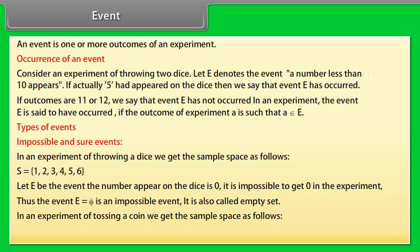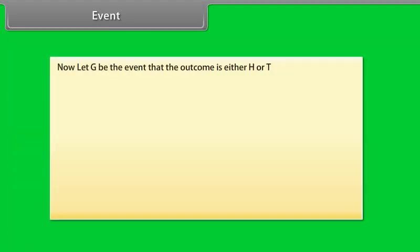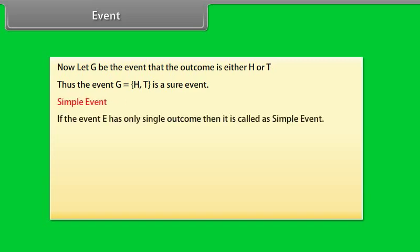In an experiment of tossing a coin, we get the sample space S = {H, T}. Now let G be the event that the outcome is either H or T. Thus, the event G = {H, T} is a sure event.